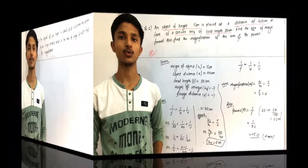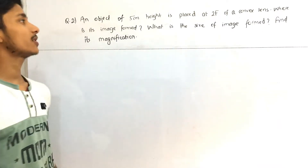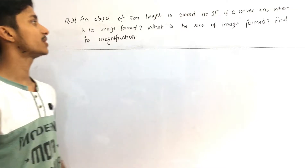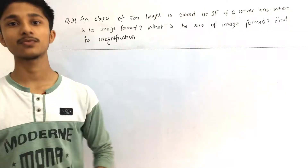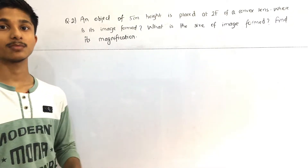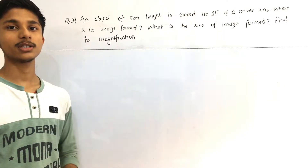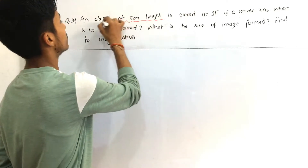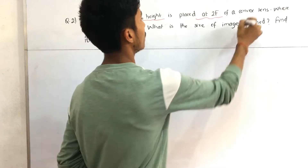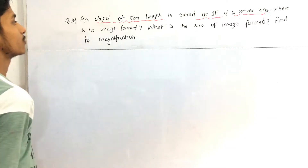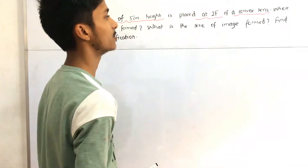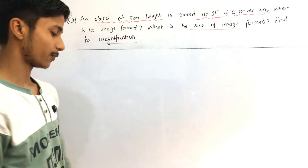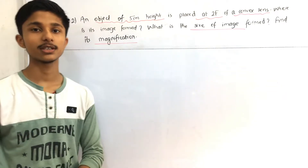Now we move to question number 2. An object of height 5 centimeter is placed at 2f of a convex lens. Where is its image formed? What is the size of the image formed? Find its magnification. So: height of object = 5 centimeter, object is placed at 2f of a convex lens. We need to find image position, height of image, and magnification.